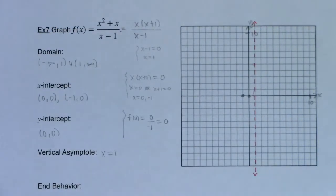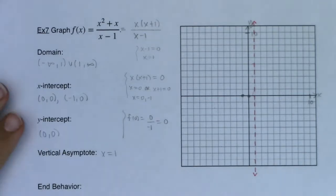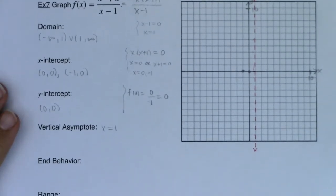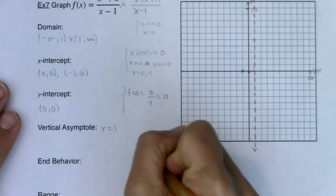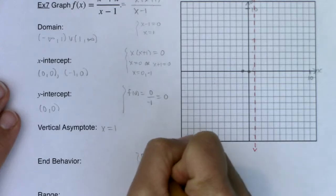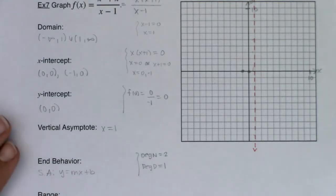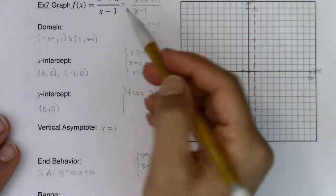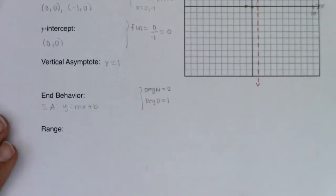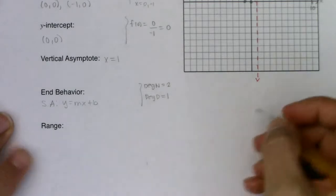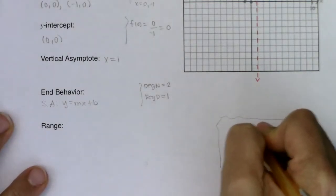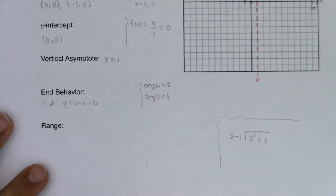And then let's see the next thing we have to do is end behavior. End behavior means I need to look at the degree of the numerator and the degree of the denominator. The degree in the numerator is two and the degree in the denominator is one. We're in a special case here when the degree in the numerator is exactly one higher than the degree in the denominator you have a slant asymptote for your end behavior. So where previously I had horizontal asymptotes I have a slant here. And if we want to find the equation of that slant asymptote we're going to need to use long division.